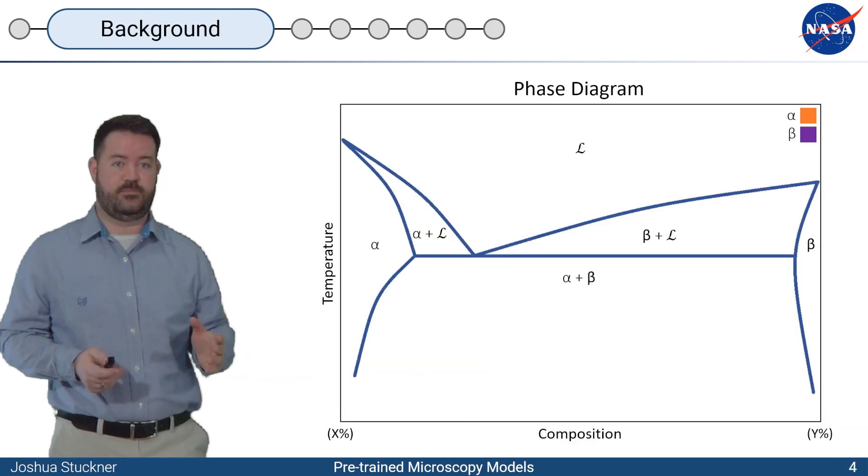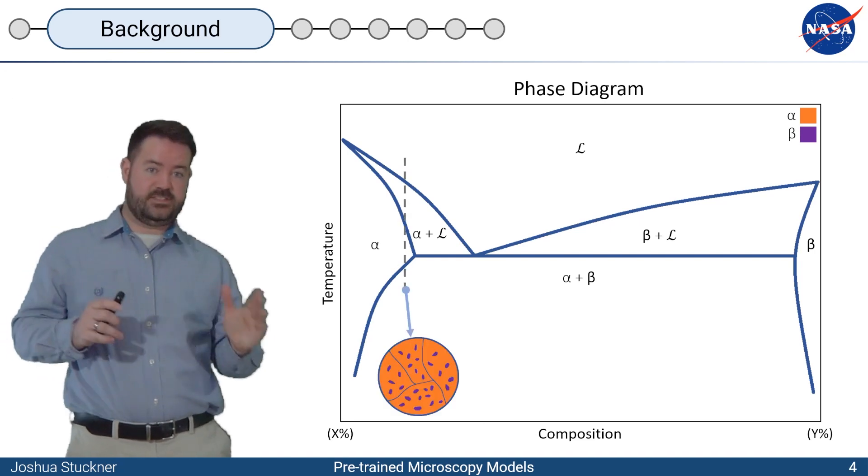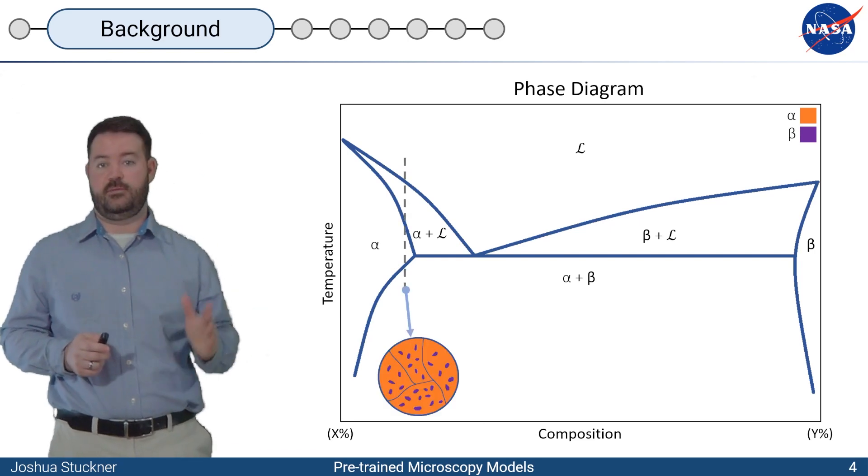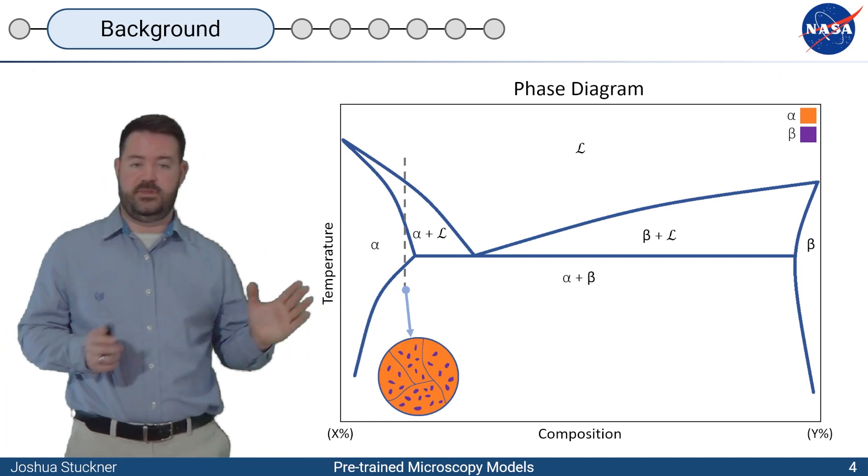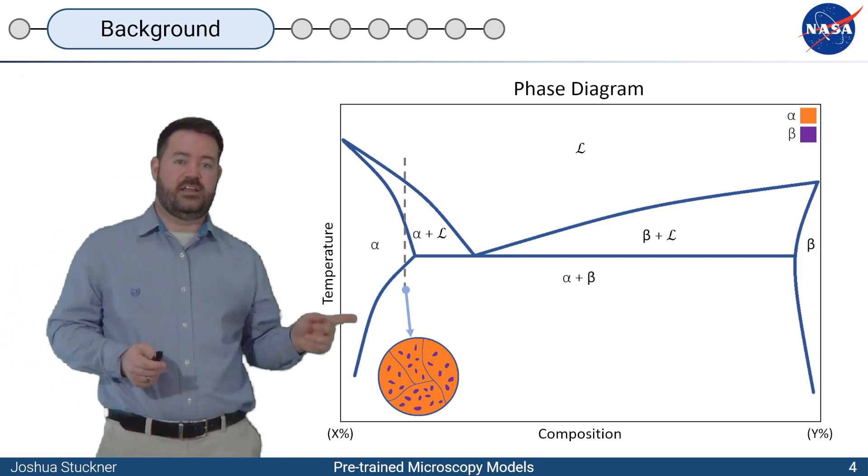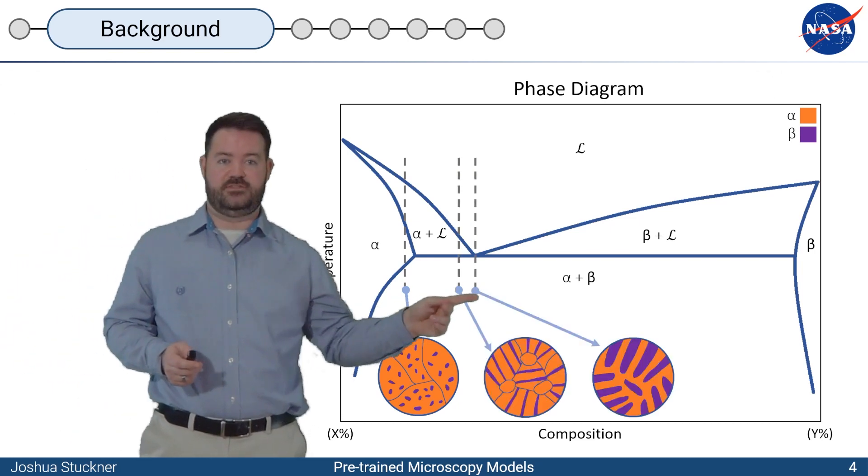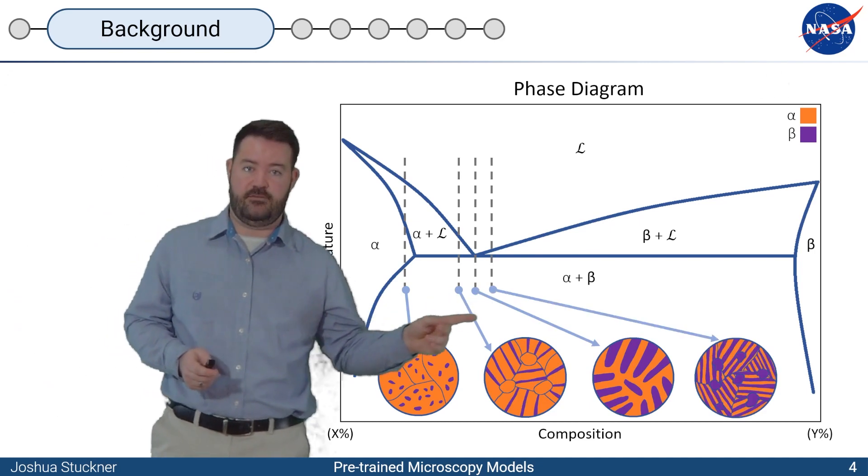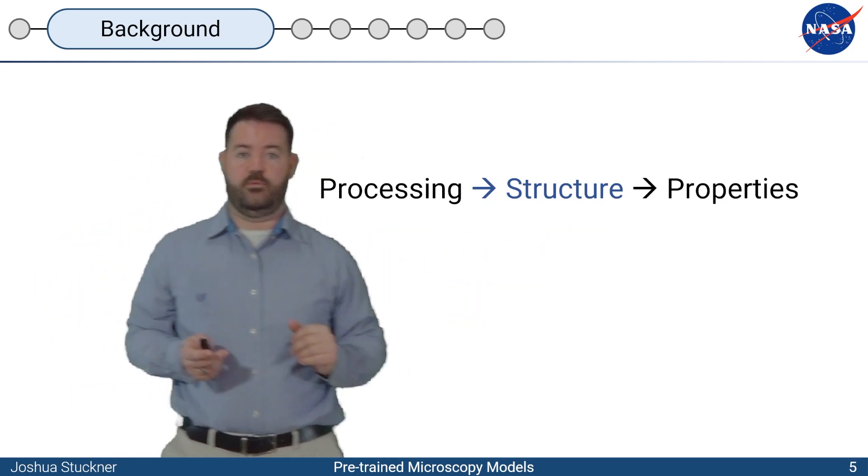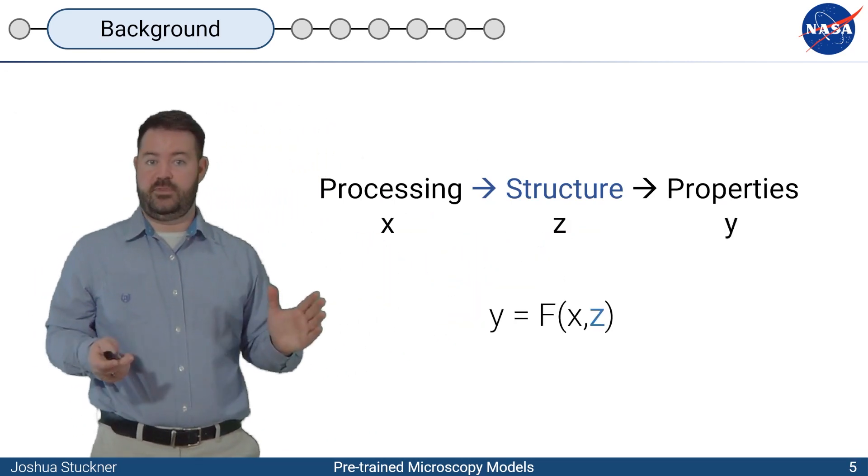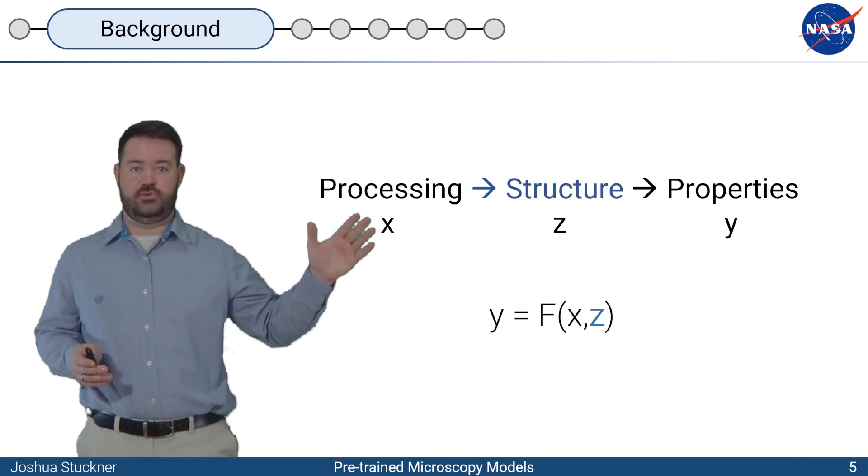You may have noticed that we're actually missing something here and that would be the microstructure of the material because how we make the material has a massive impact on the microstructure which in turn has a massive impact on the properties. So we really need to capture the full PSP relationships in order to build these models and do inverse design.